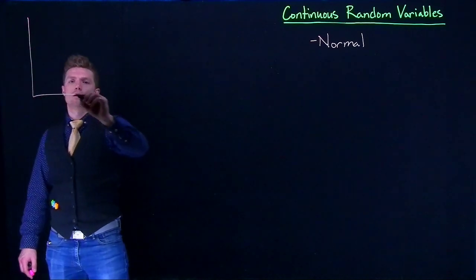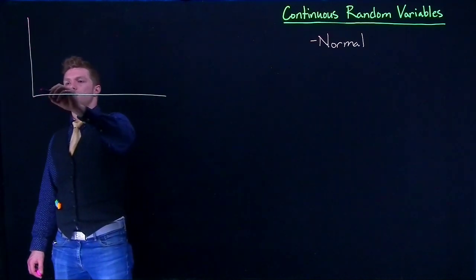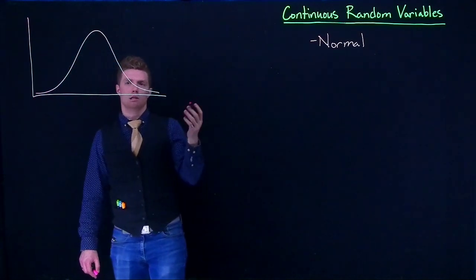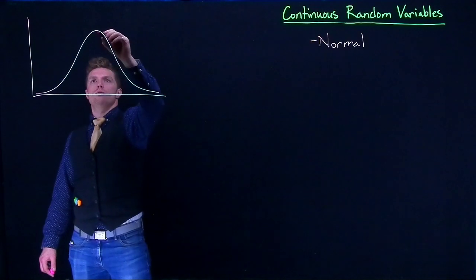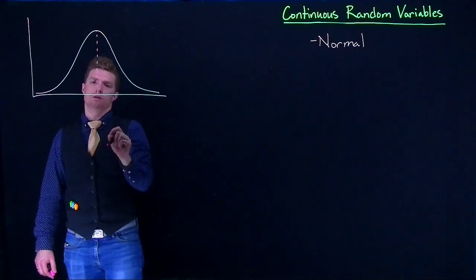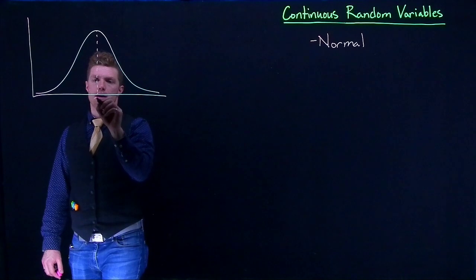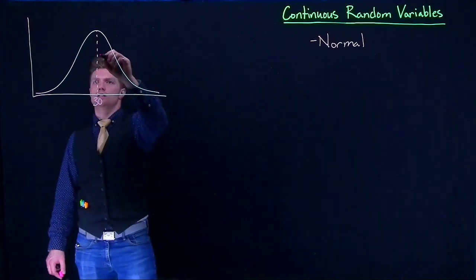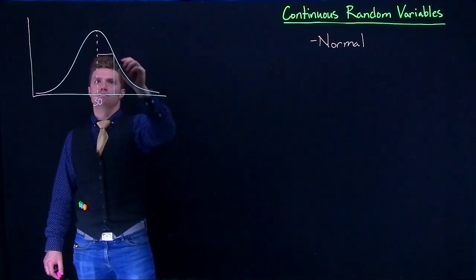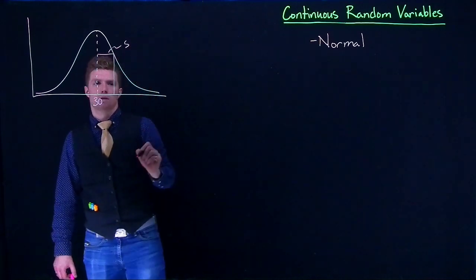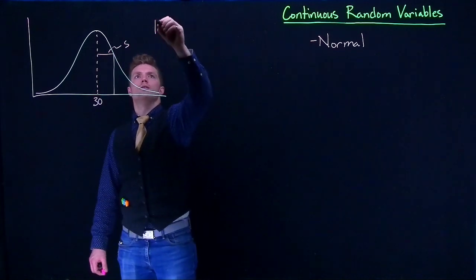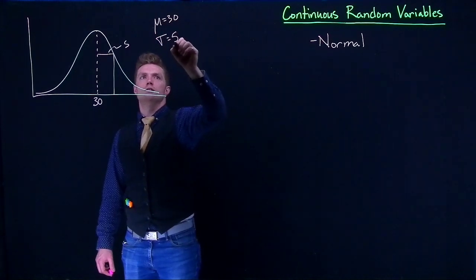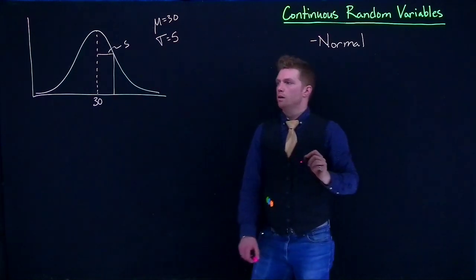Let's suppose that weights of dogs are normally distributed. And we'll say that the mean is going to be 30 pounds and the standard deviation is 5. So we've got μ equals 30 and the standard deviation equals 5.